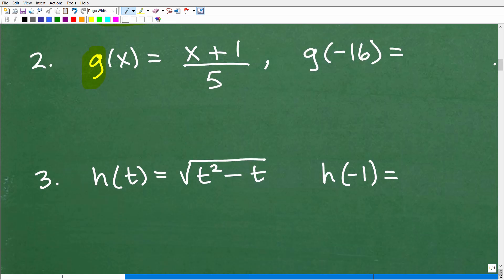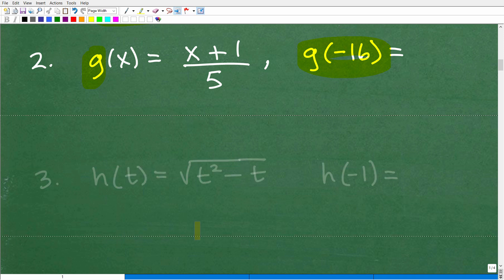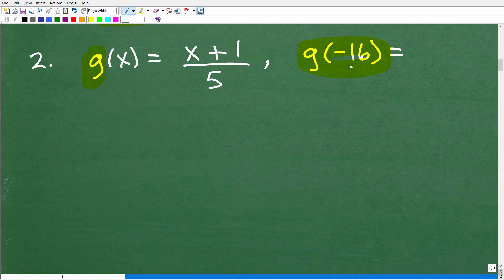Here we have g of x, the g function, that's the name, is equal to x plus 1 over 5. That's the rule, that's the actual function. And now we want to find g of negative 16, or we want to evaluate this g function for negative 16. So let's go ahead and do that now. If you want to pause the video and do the work, but I'm going to do this now.